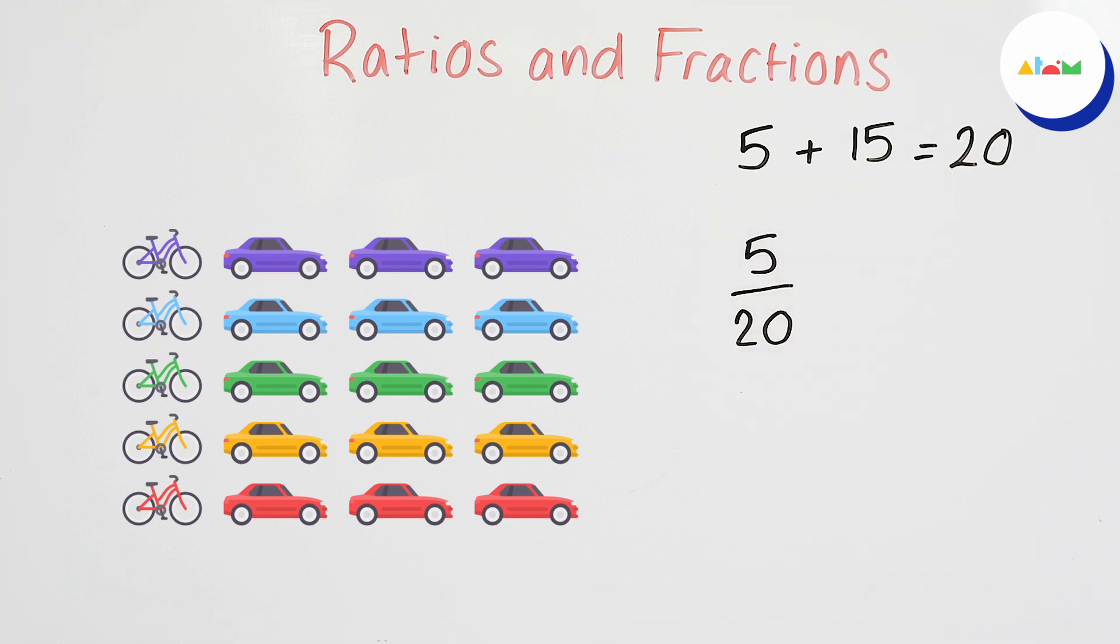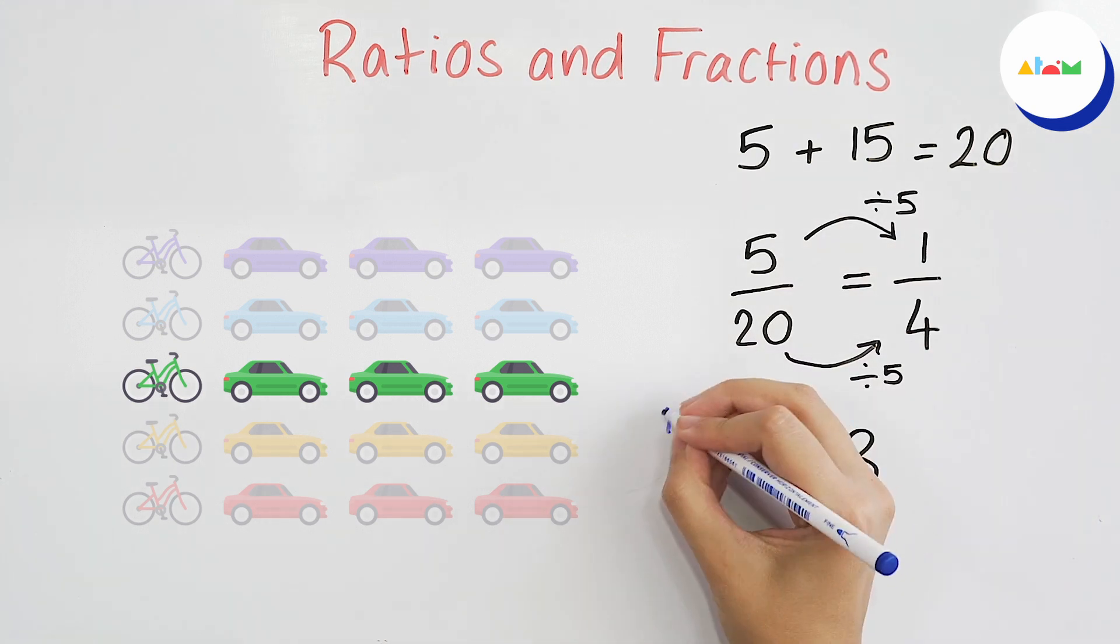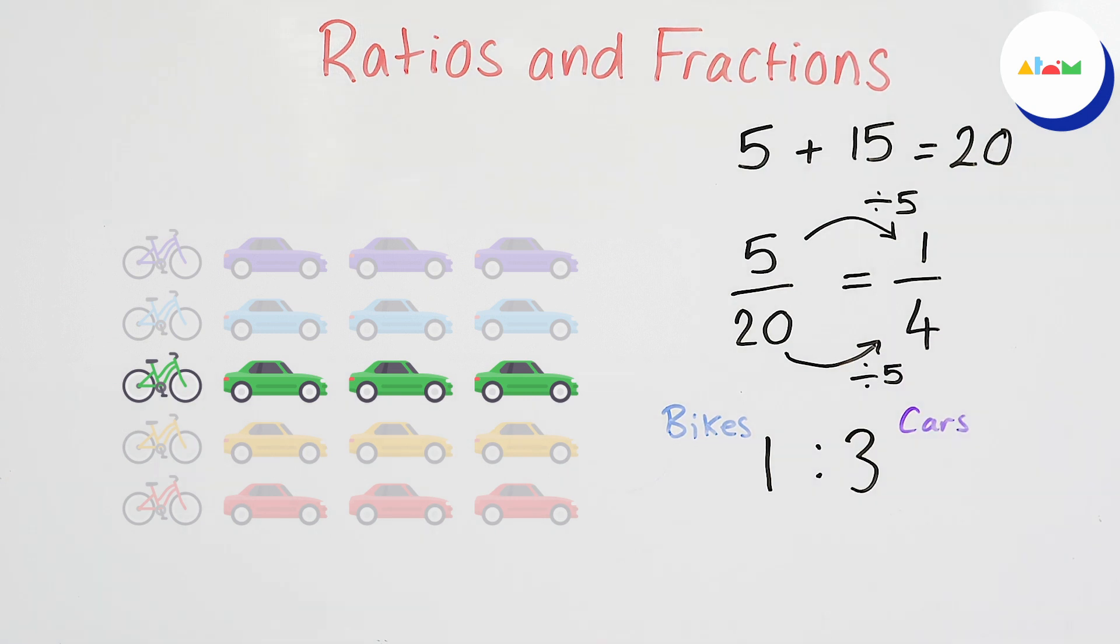Since five and 20 are both divisible by five, this fraction can be further simplified into a quarter, one over four. Remember the ratio for this was one to three because we have one bike for every three cars. But if we think about it in terms of vehicles, one in four is a bike.